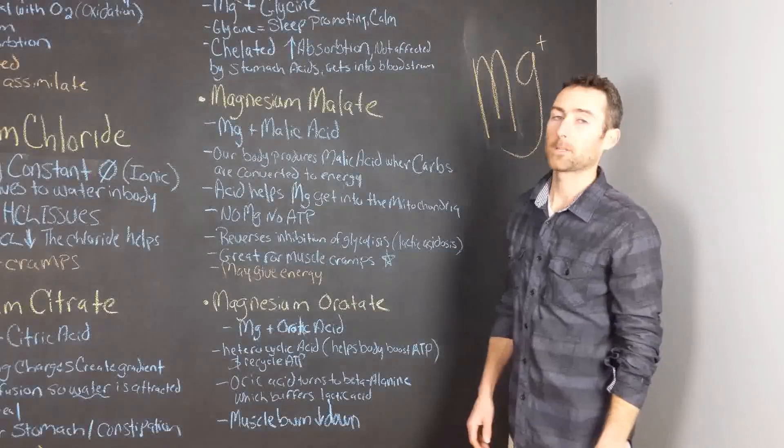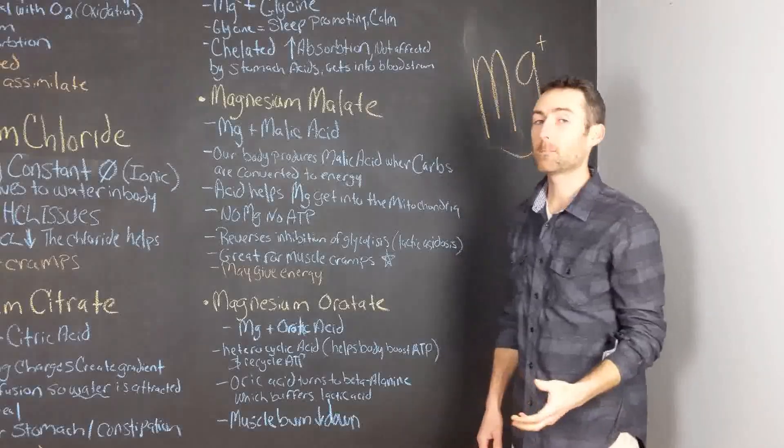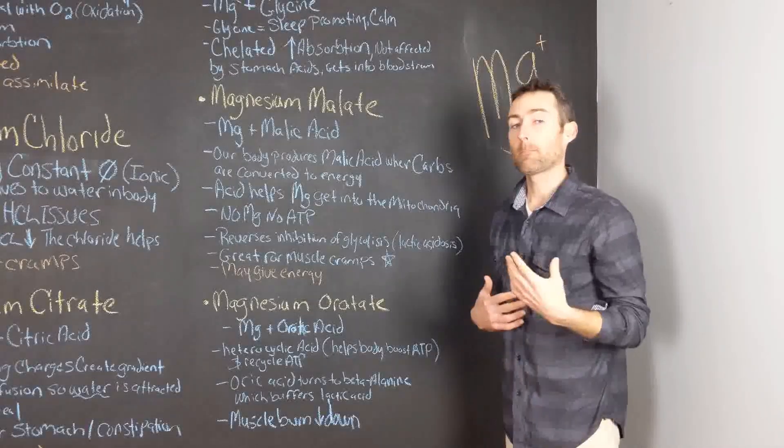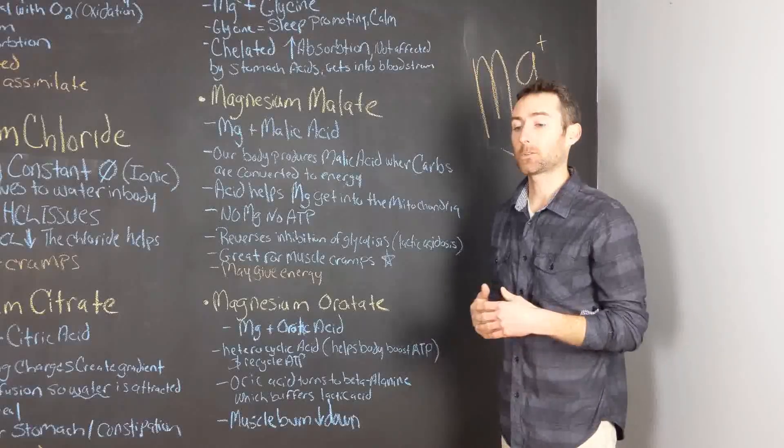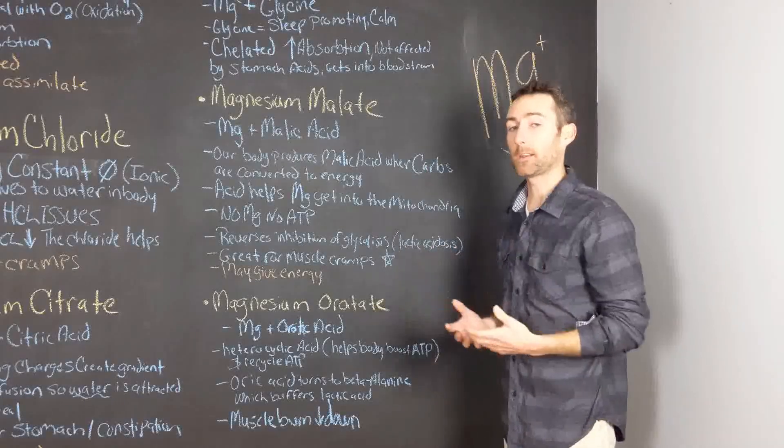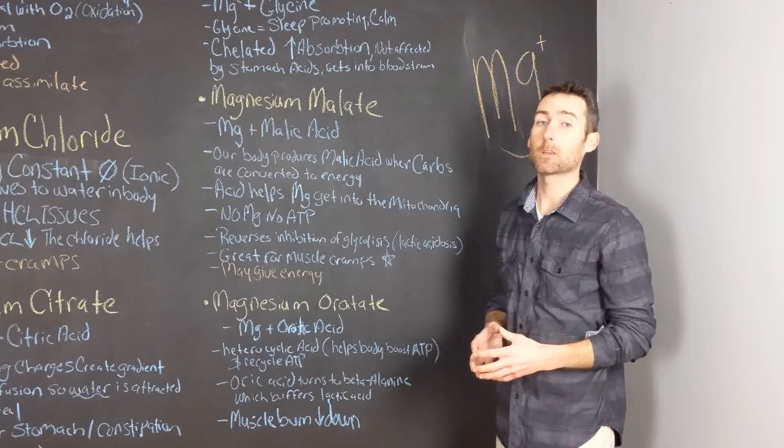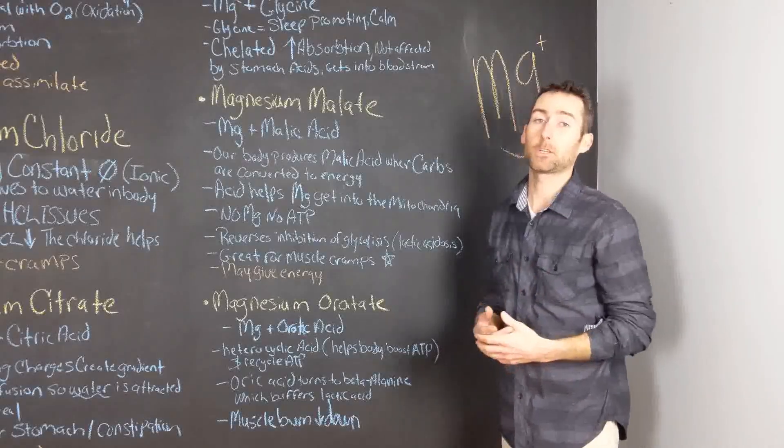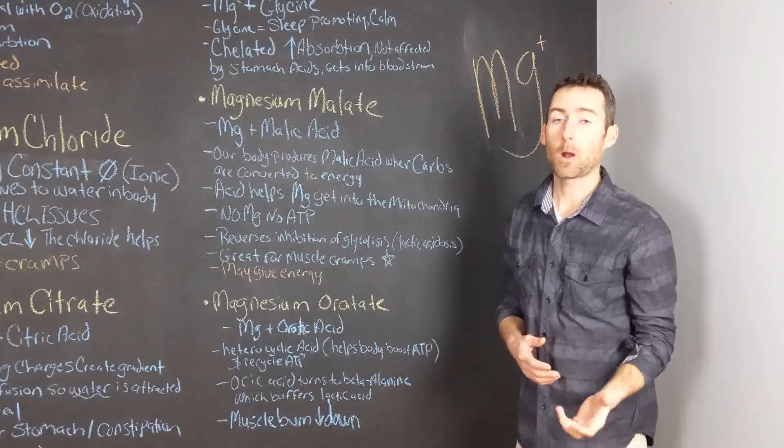The next form of magnesium I want to talk to you about is magnesium malate. Magnesium malate is magnesium bound to malic acid. Magnesium bound to malic acid actually is assimilated into our body really well.